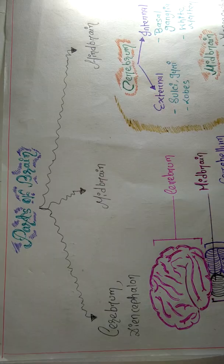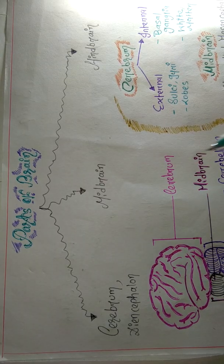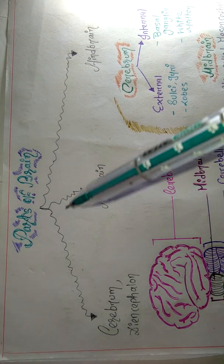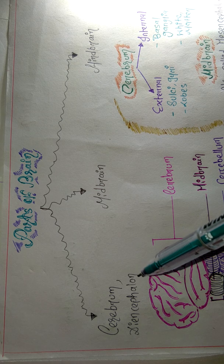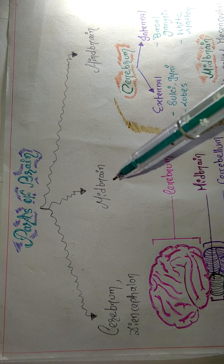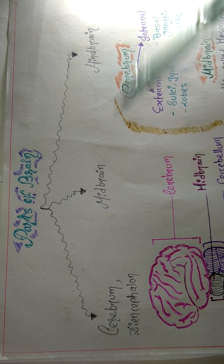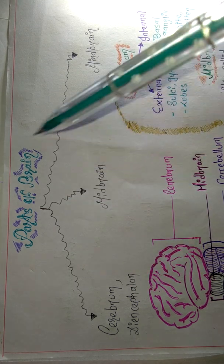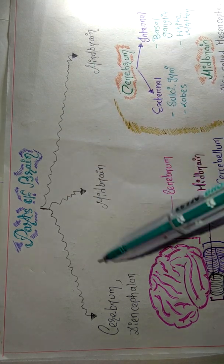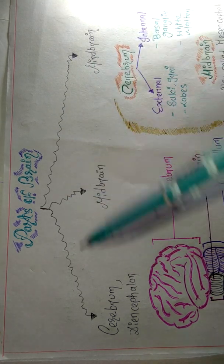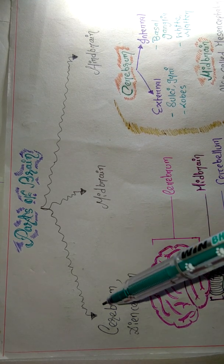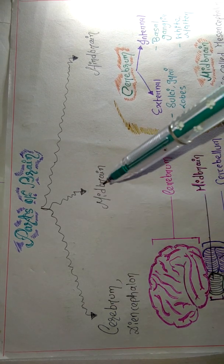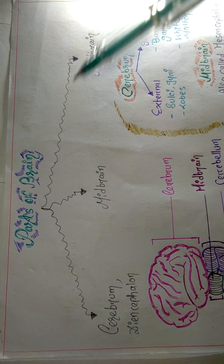Now let's understand the parts of the brain: cerebrum, diencephalon, midbrain, and hindbrain. There are mainly three broad parts of the brain — cerebrum, diencephalon, midbrain, and hindbrain.